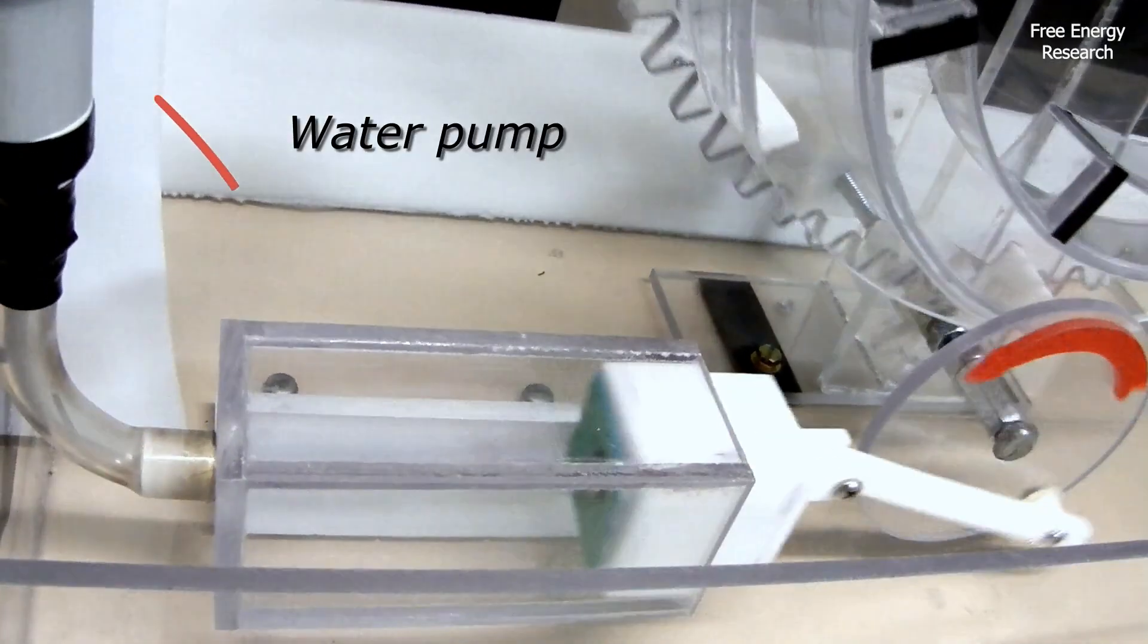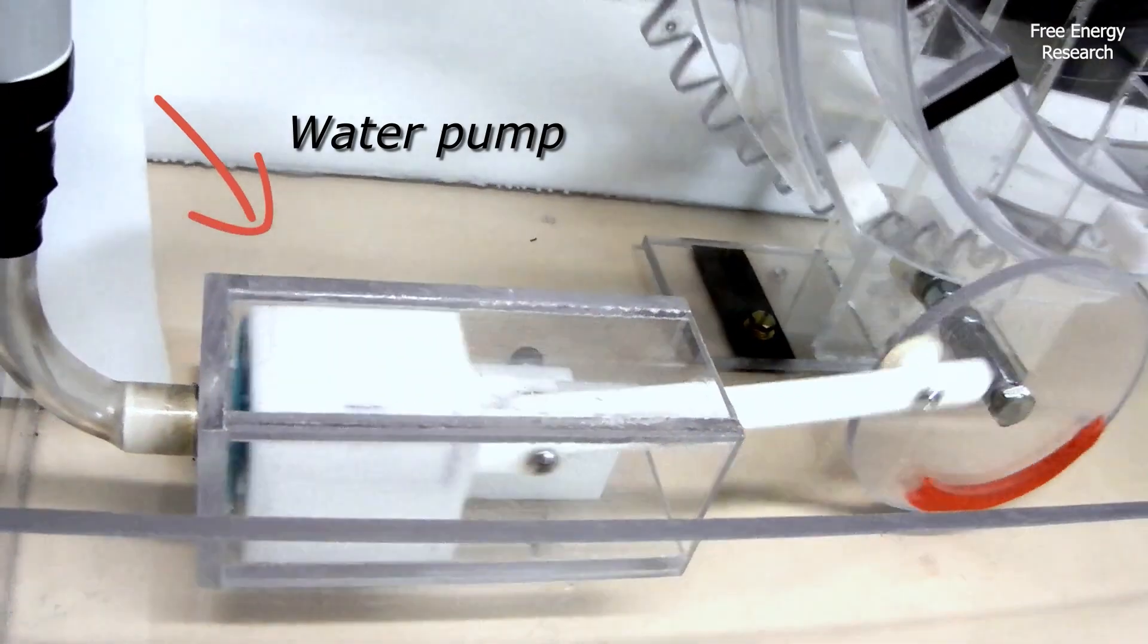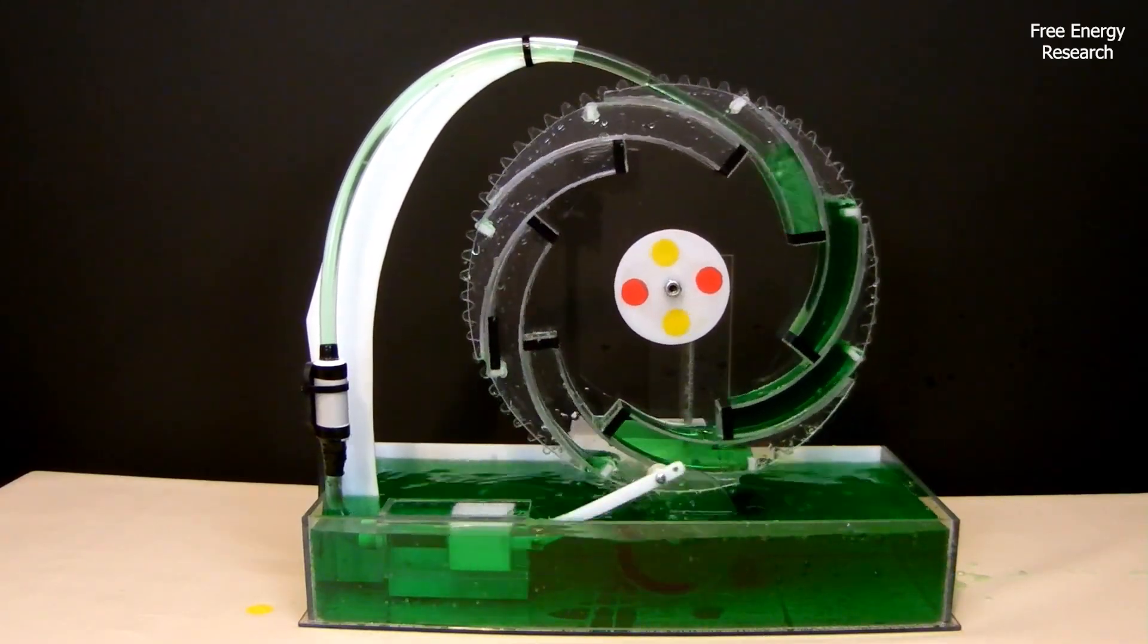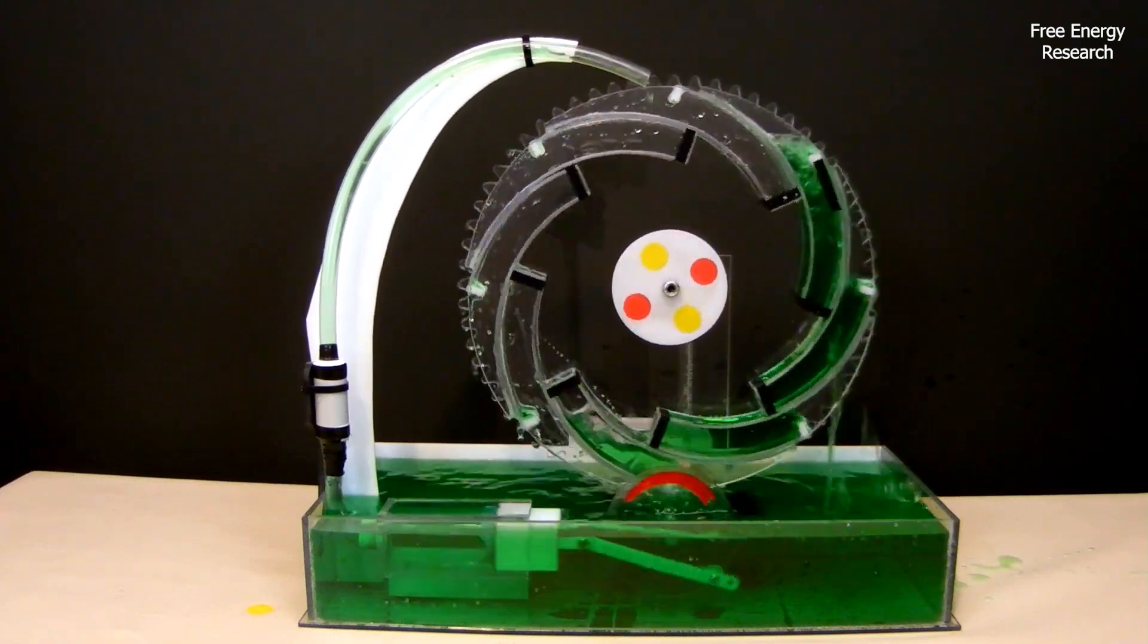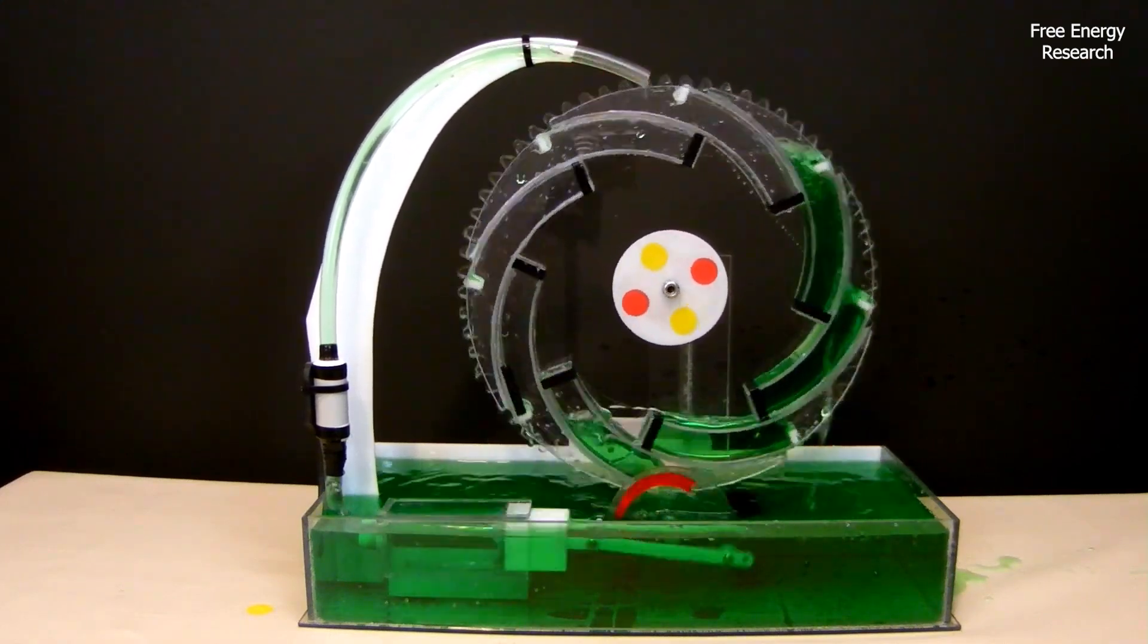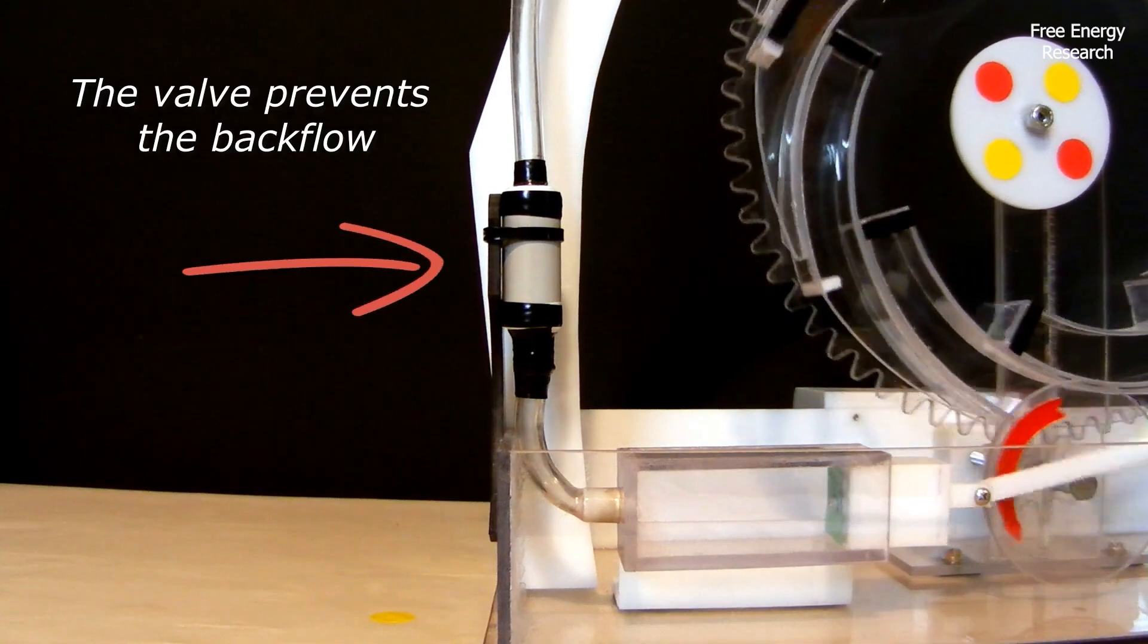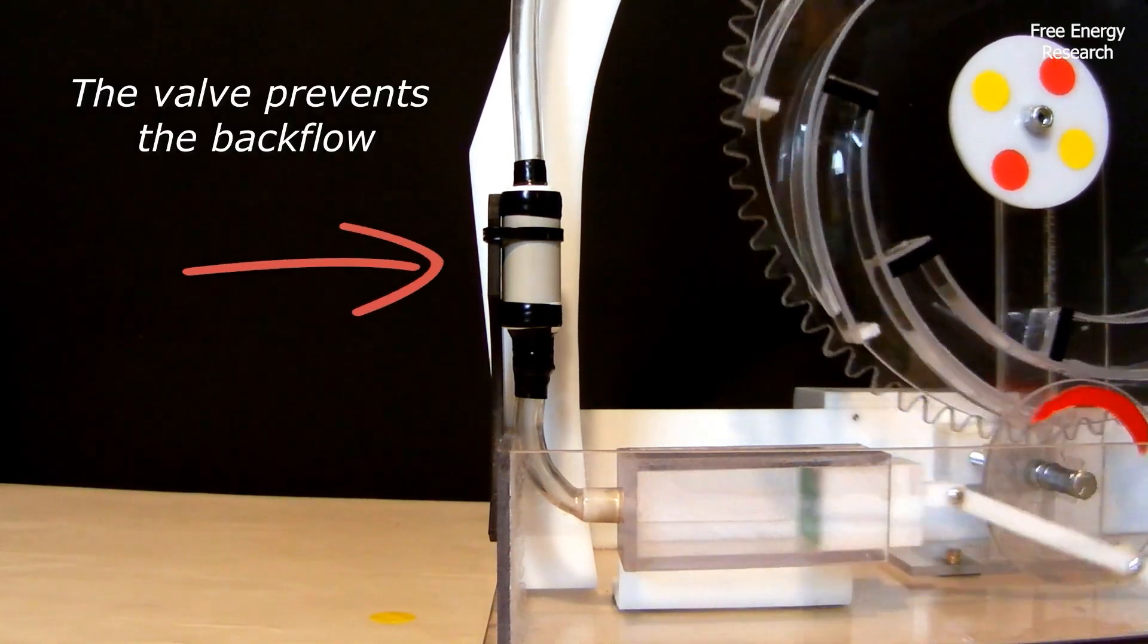The wheel drives a mechanical water pump through a gear transmission system. This pump, powered by the wheel's rotation, recirculates water from the bottom reservoir to the top of the wheel. A one-way valve ensures the flow remains consistent, preventing backflow and maintaining smooth operation.